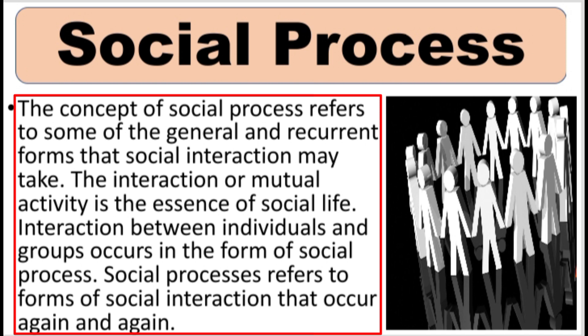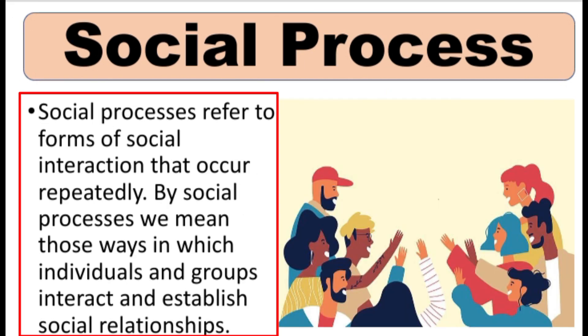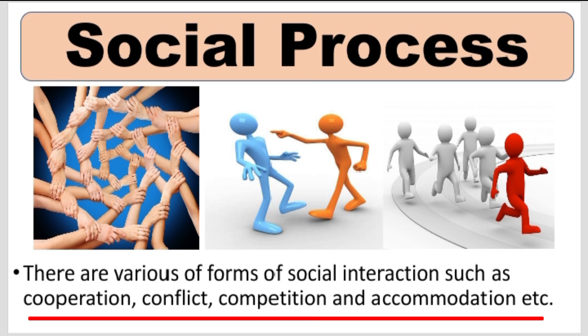Let's discuss social interaction in order to have an understanding of social process. As already mentioned, social processes refer to forms of social interaction which repeatedly occur. We can say that these are ways through which individuals and groups interact, and through which social relationships are established. We can see many forms of social interactions such as cooperation, conflict, competition, and accommodation.